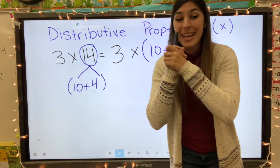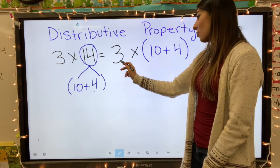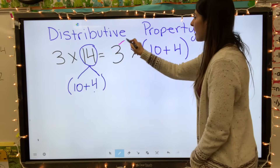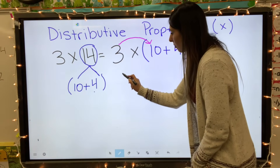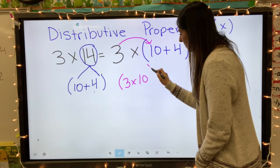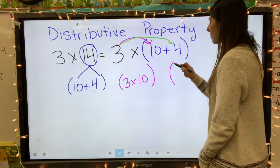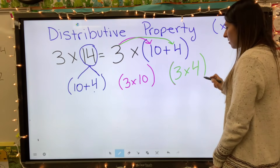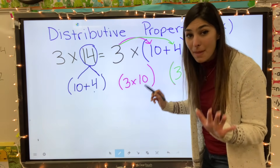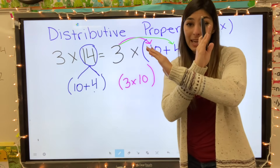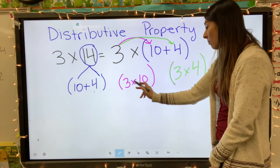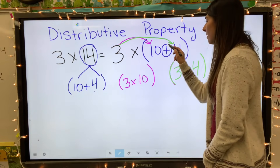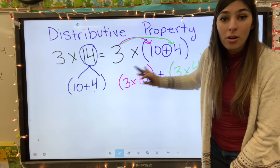So we broke up the big number — now we've got to share the love. This three has two babies that it's got to love instead of just one. I'm going to share the love from the three to the ten and make its own equation: three times ten. Then share the love with the other number: three times four. Remember, distributive property has multiplication and addition, so we're going to be adding these two results together.